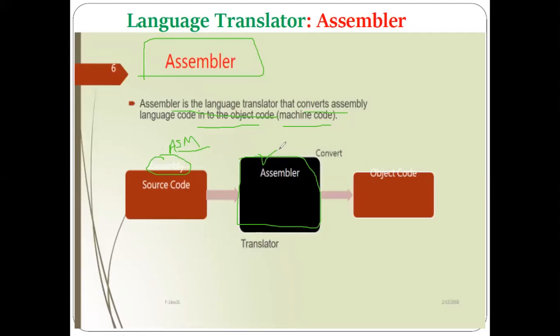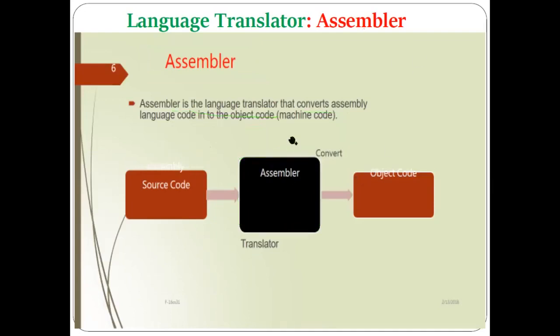Assembly language is a combination of symbolic instructions referred to as mnemonics — like MOV, ADD, etc. We also use different directives like START, END, LTORG, ORIGIN. We saw how this translator converts assembly language programs to machine code using single-pass and two-pass assemblers. All these details regarding the assembler were covered in Unit 1.